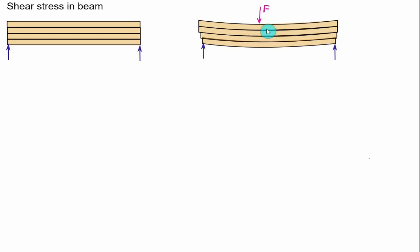each board tends to slide on the one above or below it, moving its ends from their original position. This horizontal motion of one board over the other is called horizontal shear. This is the situation when the thin boards are not connected — neither glued, screwed, nor bolted. We find that each thin board has a different length, and horizontal shearing develops between the two layers.